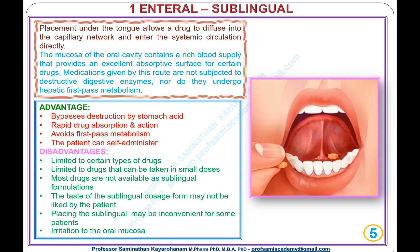Type 1, Enteral: Sublingual Route. Placement under the tongue allows a drug to diffuse into the capillary network and enter the systemic circulation directly. The mucosa of the oral cavity contains a rich blood supply that provides an excellent absorptive surface for certain drugs. Medications given by this route are not subjected to destructive digestive enzymes, nor do they undergo hepatic first-pass metabolism.